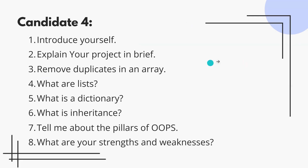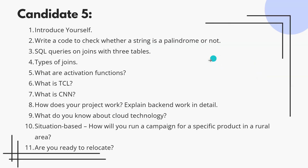This is Candidate 5, a GenC Pro student. Introducing yourself should align with the role you are applying for. Write code to check whether a string is a palindrome. Use a two-pointer or recursive approach for optimized performance. If you use a less efficient approach, they will ask you to rewrite it in a better one — so aim for the optimal approach in your first attempt.